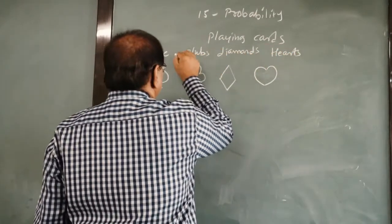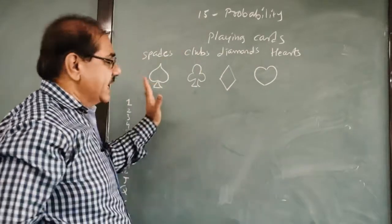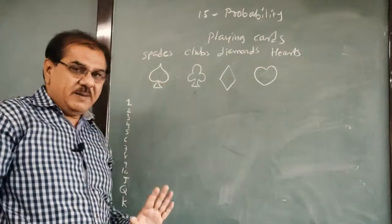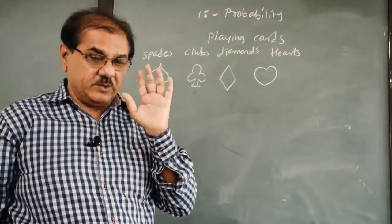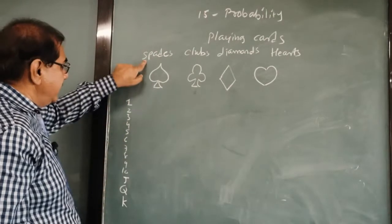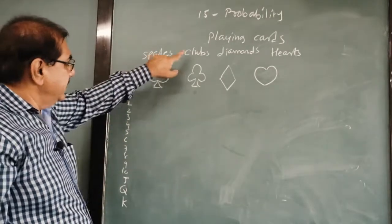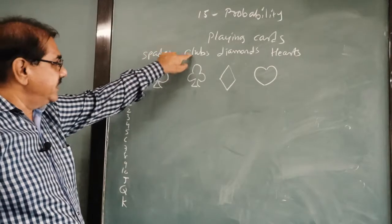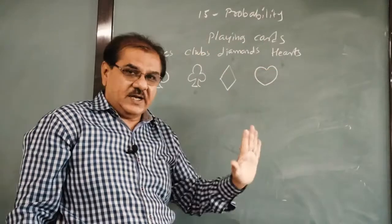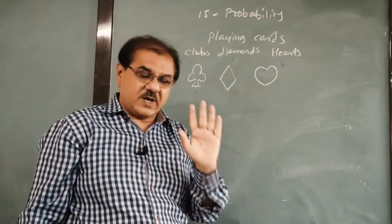These are the different types of cards you find in the deck of a card. You know how many cards are there in one deck? 52. So there are 13 cards of spade, we call it kadi. 13 cards of clubs, 13 cards of diamonds, and 13 cards of hearts. Totally 13 times 4, 52 cards.